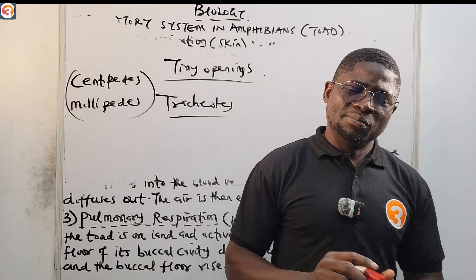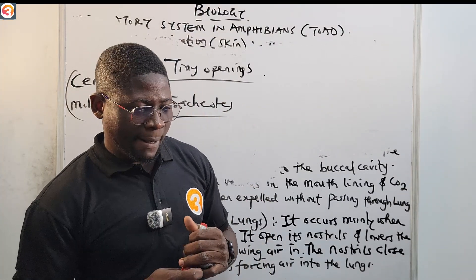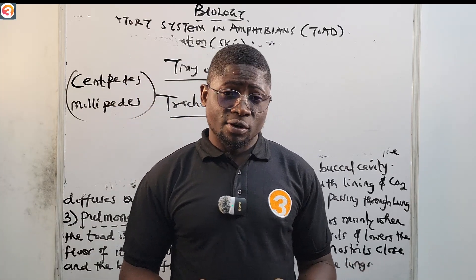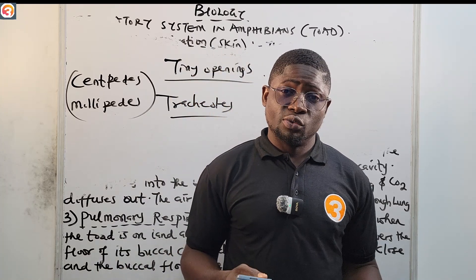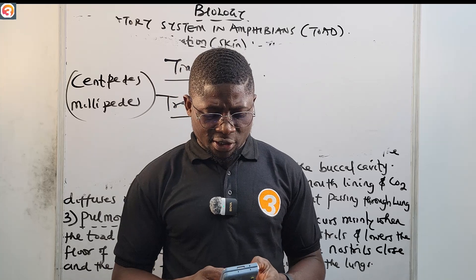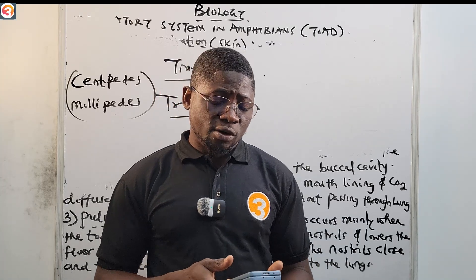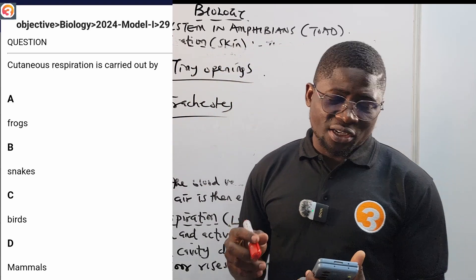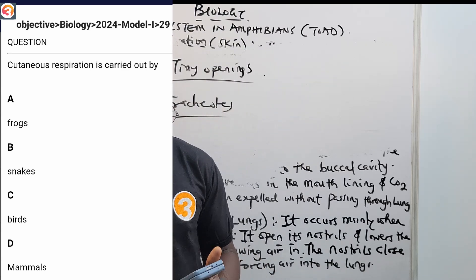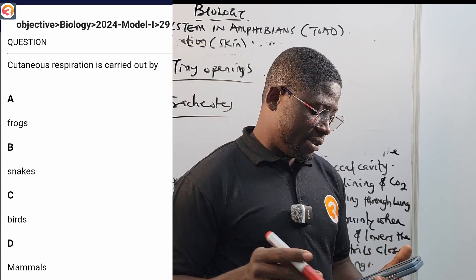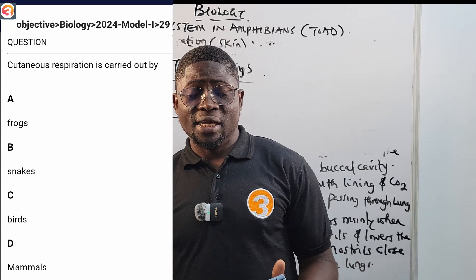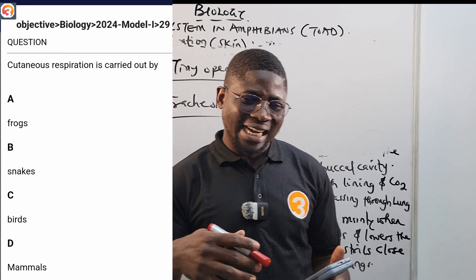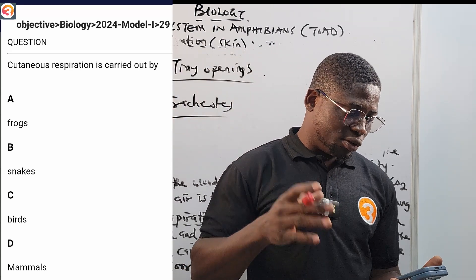Now let's review some practice questions. 2024 question 29: 'Continuous respiration is carried out by: A) Frogs, B) Snakes, C) Birds, D) Mammals.' Continuous respiration is carried out by amphibians, and the frog is an amphibian — so the correct answer is option A, the frog.